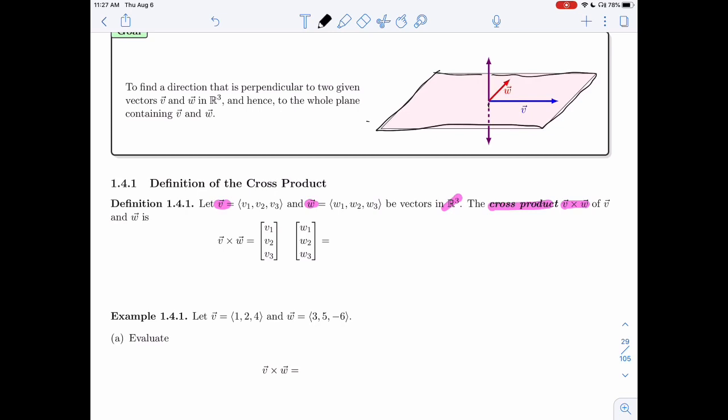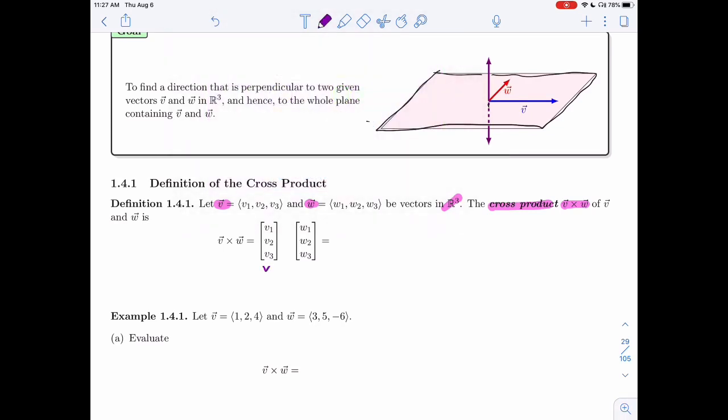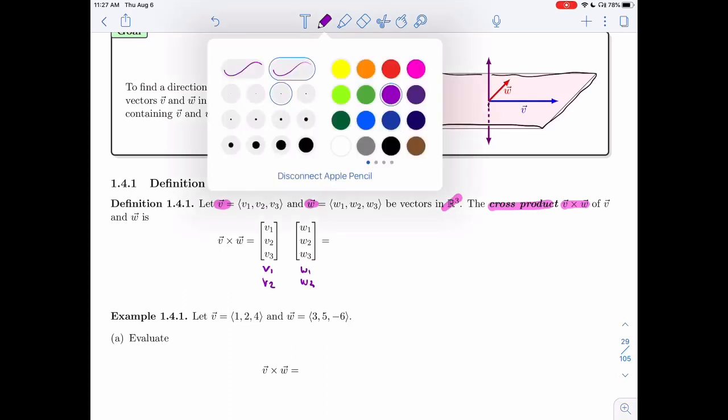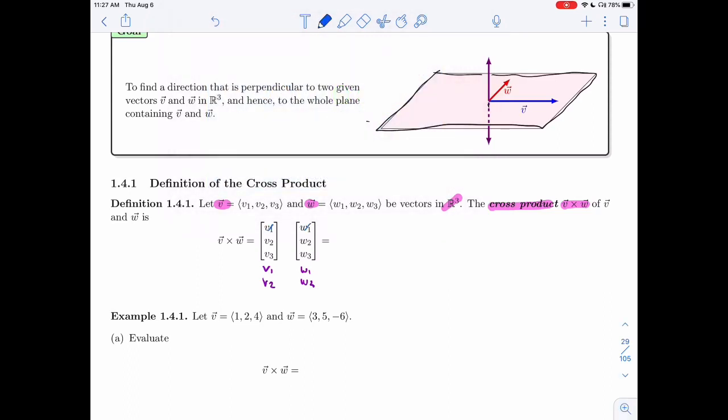Let's define it. If I have V cross W, what I'm going to do is I'm going to rewrite the first two components of each vector underneath. This is my little trick. Then I'm going to ignore the first and I'm going to draw an X over here. That's going to tell me what my first component of V cross W should be. I'm going to take the downward product, so V2, W3. I'm going to subtract the upward product from it.